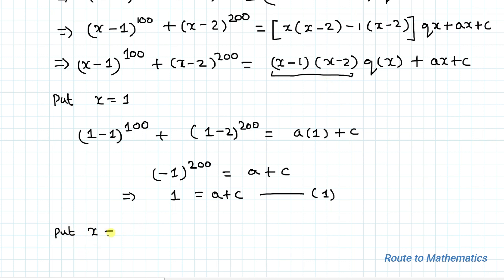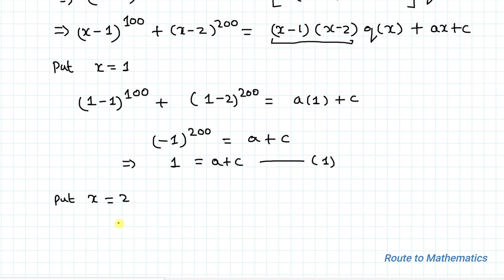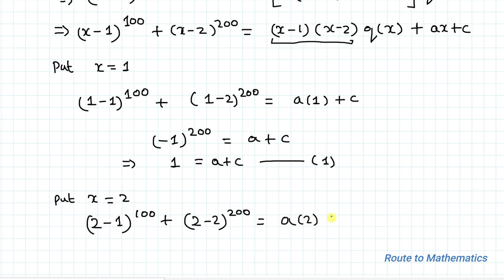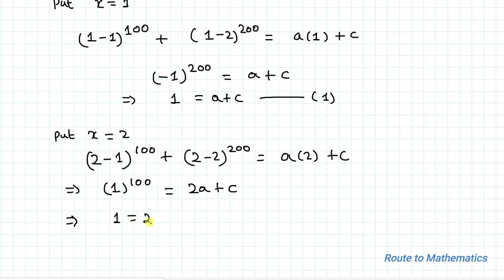Now put x equals 2. By putting x equals 2 we have (2 minus 1) to the power 100 plus (2 minus 2) to the power 200. The second term becomes 0. We have 1 to the power 100 equals a times 2 plus c. So 1 equals 2a plus c. This is equation 2.